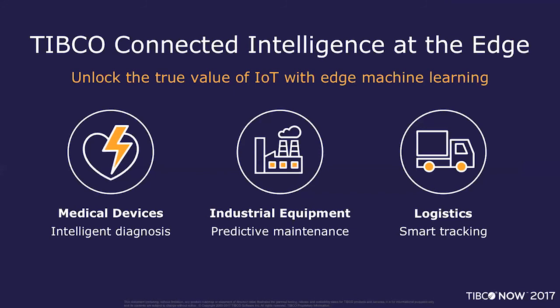And you can do all this without exposing data in any potentially unsafe manner. All the way to industrial equipment — folks are now able to run predictive maintenance routines on the equipment itself, thereby acting on it before a costly accident occurs, saving lives, money, time, and effort. Incredible use cases across diverse industries. We truly believe this is all about unlocking value — bringing connected intelligence out to the very edge.